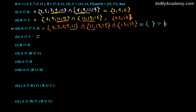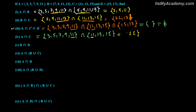Now what is the common between A and C? In A we have 3, 5, 7, 9, 11, intersection with C which has 11, 13, and 15. What is the common between these two? Eleven is in A also and eleven is in C also. So A intersection C is {11}.